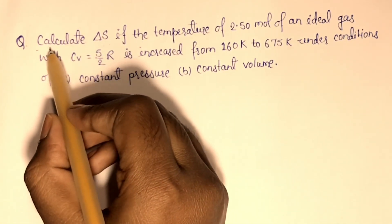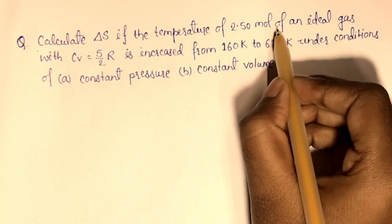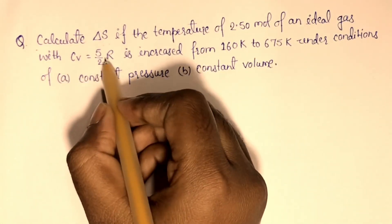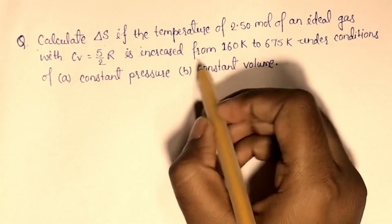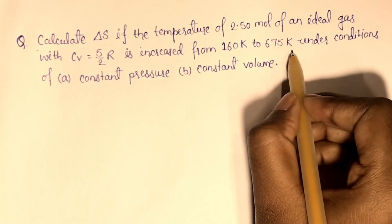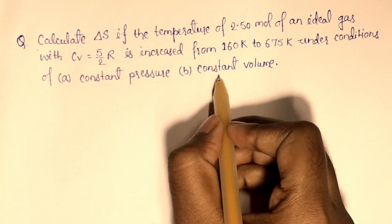The question is: calculate entropy change if the temperature of 2.5 mol of an ideal gas with Cv equal to 5 by 2 R is increased from 160 Kelvin to 675 Kelvin under conditions of A, constant pressure and B, constant volume.